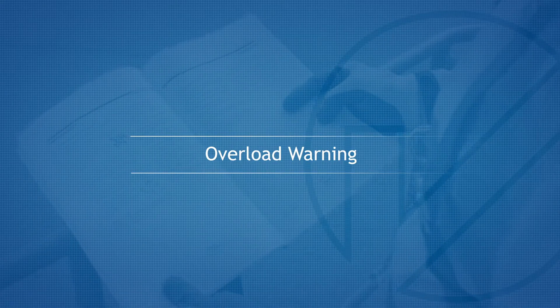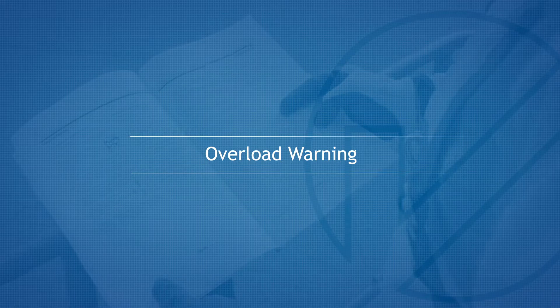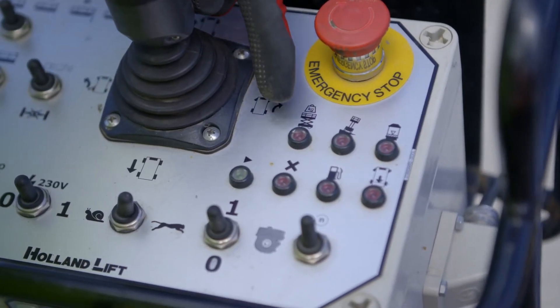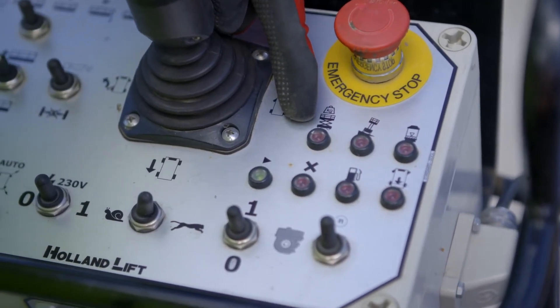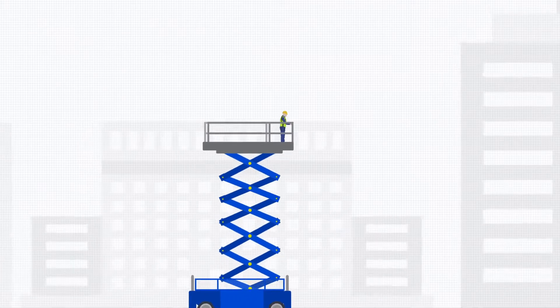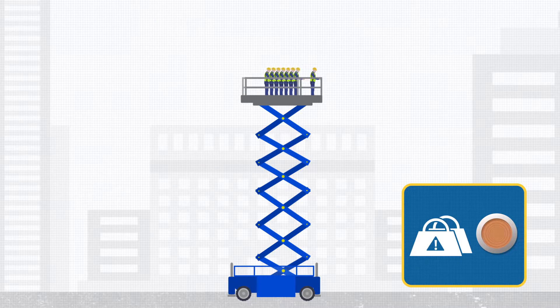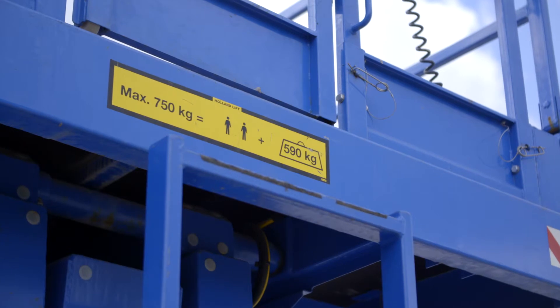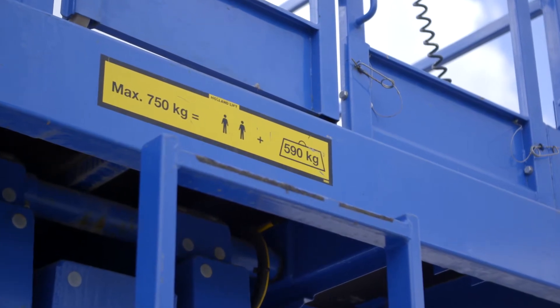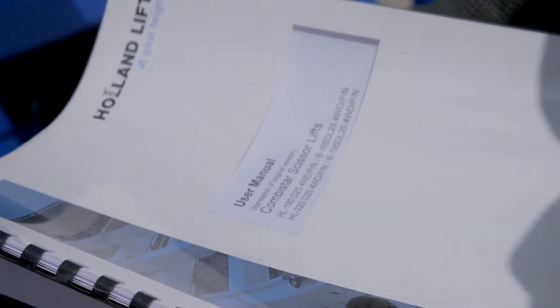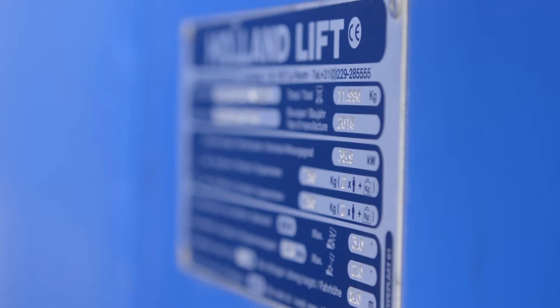Overload warning: The machine is fitted with an overload protection device that will sound an alarm and display a warning light when the safe working load is exceeded. All of the scissor lift's movement functions will be deactivated if the platform weight limit is exceeded. Remove the excess weight from the platform until the light goes off. For additional information, refer to the safe working load decal, the operator's manual, or the manufacturer's data plate.